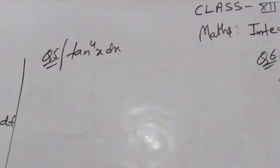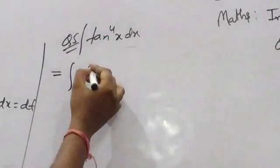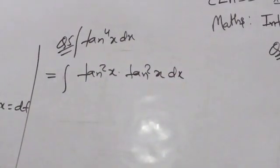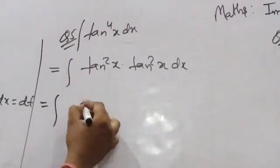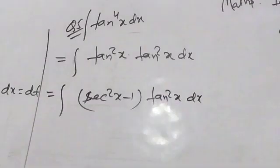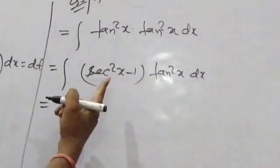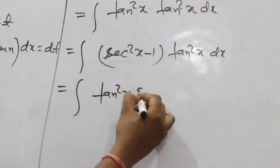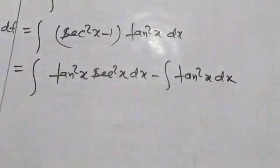Question number 5: integration of tan⁴x dx. tan⁴x = tan²x · tan²x = tan²x · (sec²x - 1) dx, since sec²x - 1 = tan²x. Now we split: tan²x·sec²x dx minus tan²x dx.